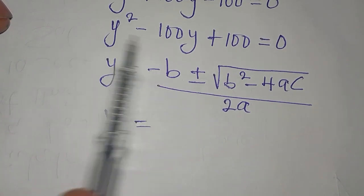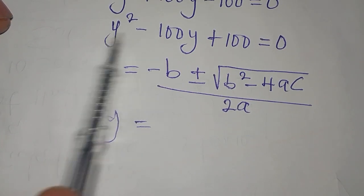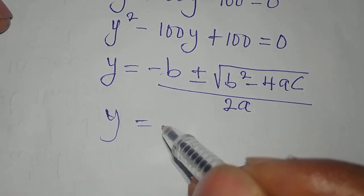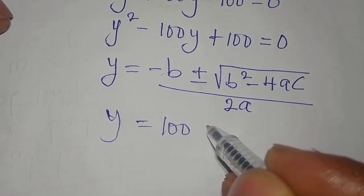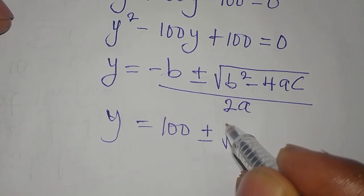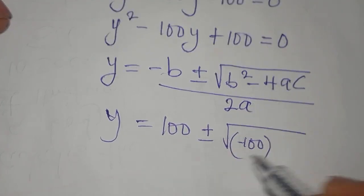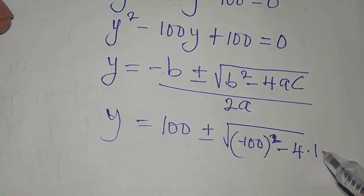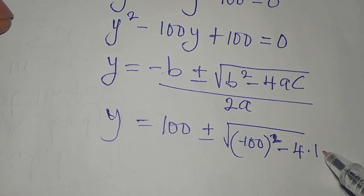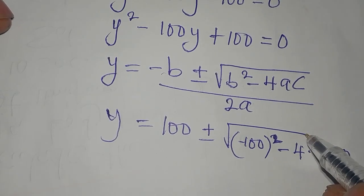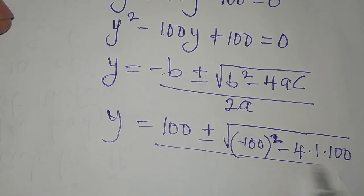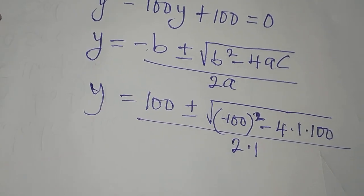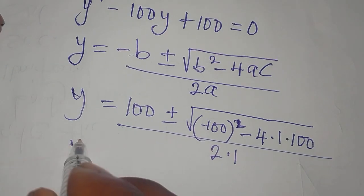So we are going to have minus (minus 100), which gives us plus 100, plus or minus the square root of (minus 100) squared minus 4 times 1 times 100. This is all over 2 multiplied by 1.